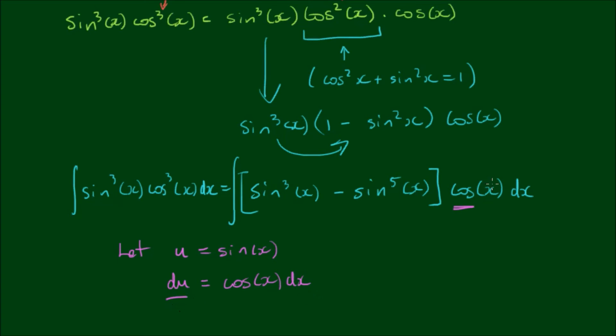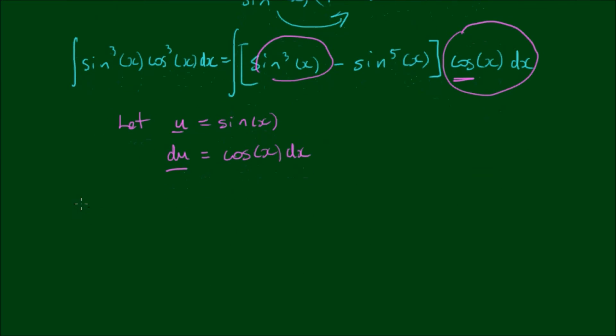Okay, so we just substitute du for cos x dx, and we substitute u for sin. So the integral becomes the integral of u cubed minus u to the fifth power with respect to u.